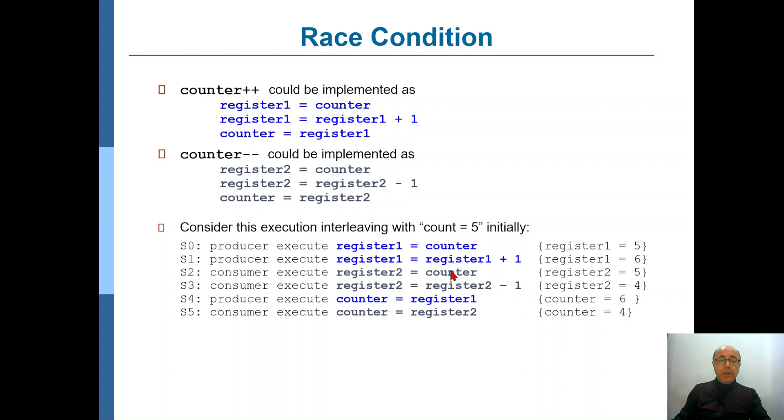So when this happens, the consumer process will try to decrement it, so it will take the value of the variable counter into register R2. Hey, what was the value of the variable in the memory? It's still five. The updated value in R1 has not been copied into the variable yet, because this instruction, the third instruction here, has not been executed yet. So it will take into R2 the value five, decrement it by one—four—then again a context switch, let's say, to the producer process. So it will copy the value of register R1 to the memory, so it will become six. But then, when we have a context switch back to the consumer process, that will take it back to four.